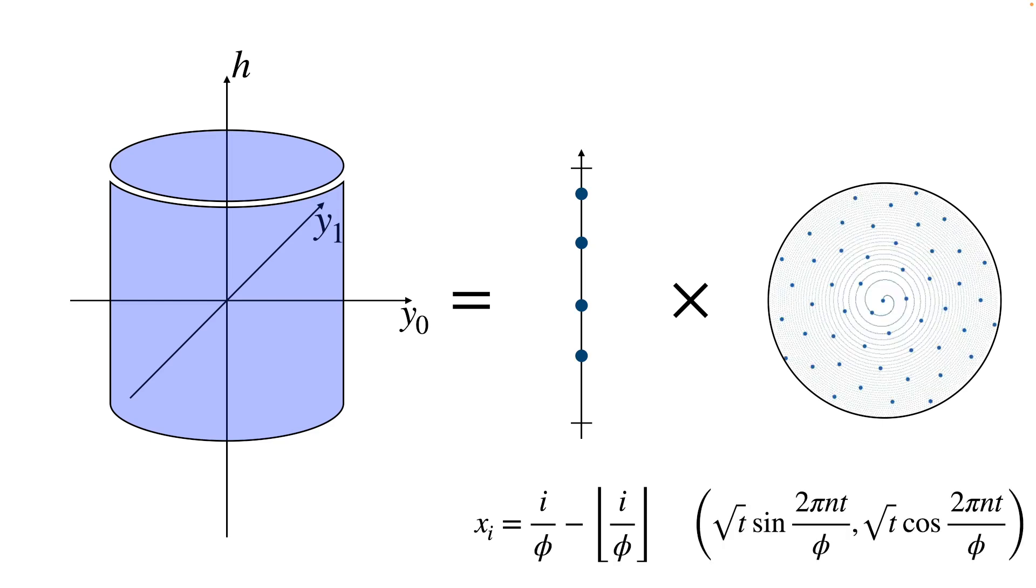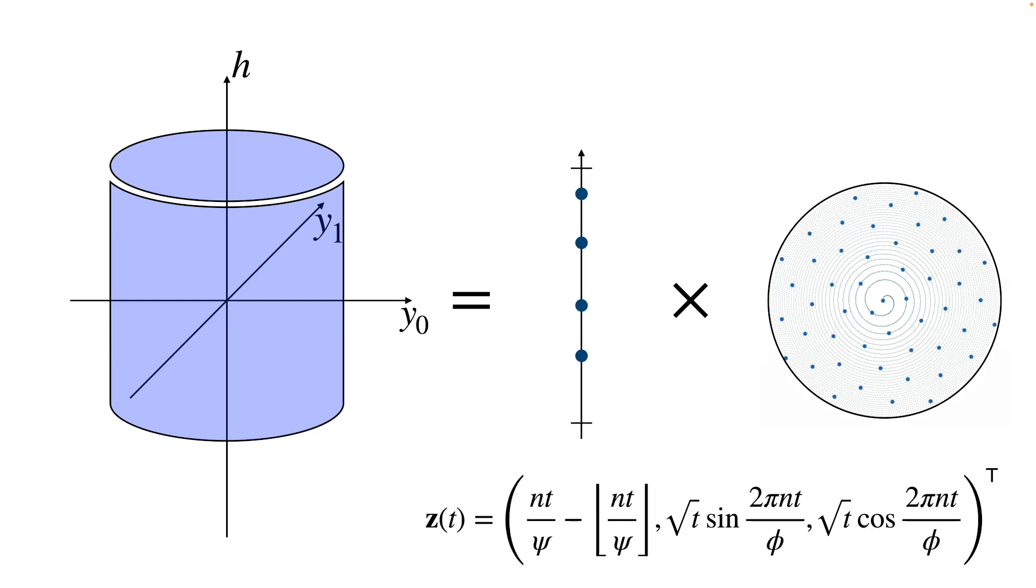Together this yields a parametric curve for sampling the solid cylinder. Notice that I chose different constants for the two domains. This will turn out to be important.